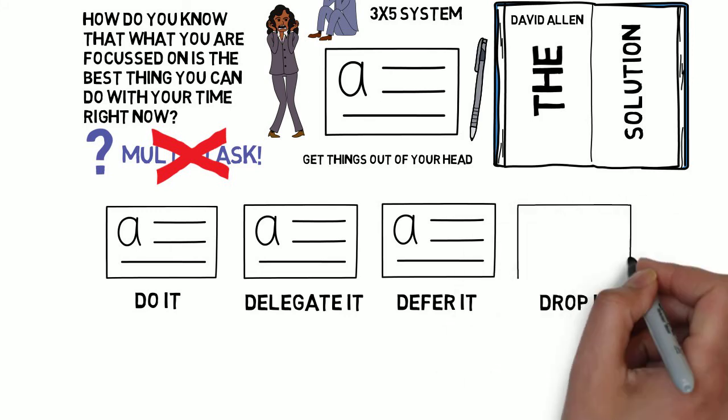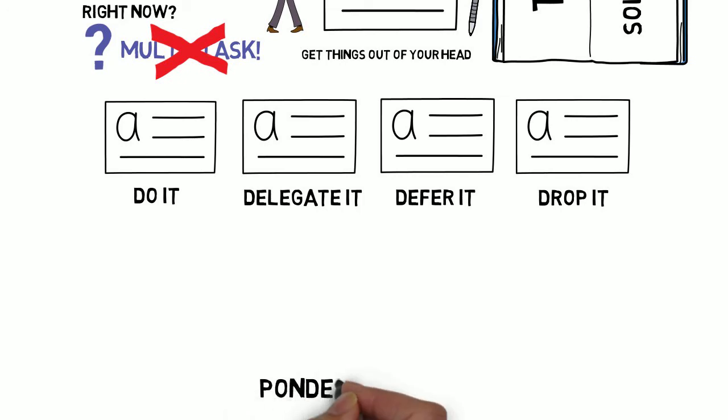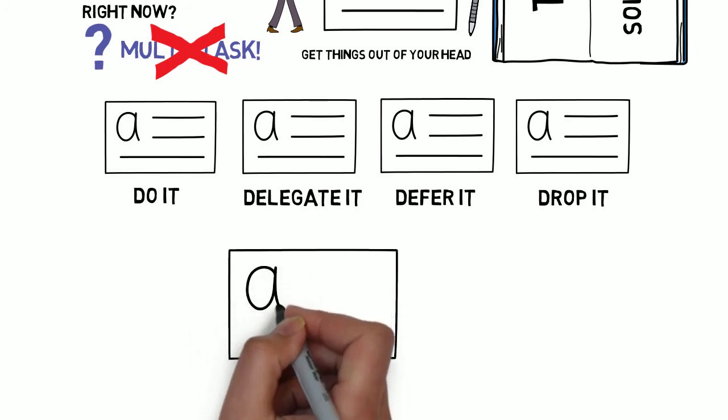I also have a 5th category that I use called Ponder It, for ideas that I have that need long term thinking and planning, and that I kind of have sitting there in the back of my mind.